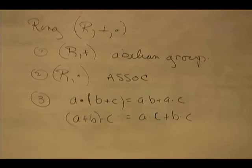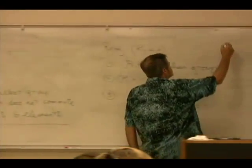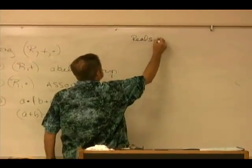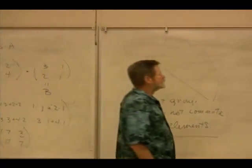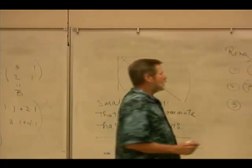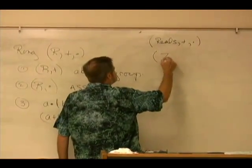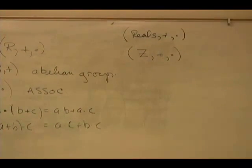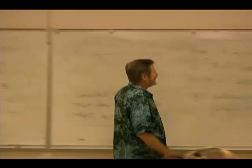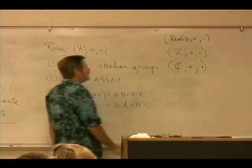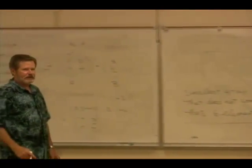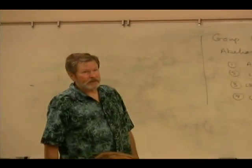Examples of rings that we know. The reals under usual addition and usual multiplication form a ring. The integers Z under addition and multiplication form a ring. Complex numbers with addition and multiplication of complex numbers also form a ring. These are all three rings.